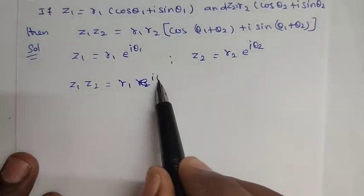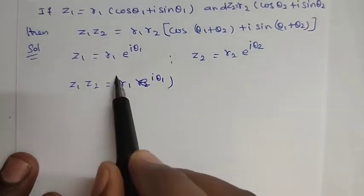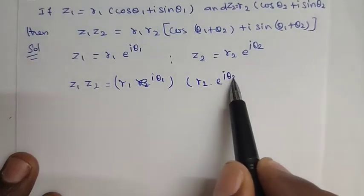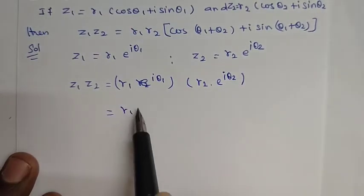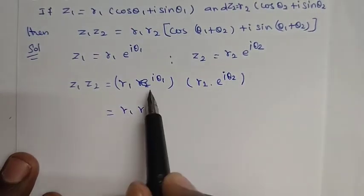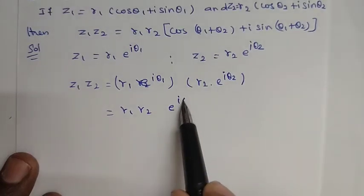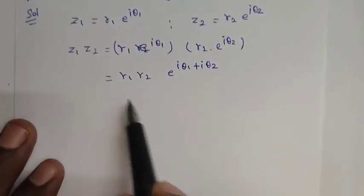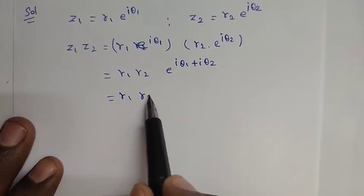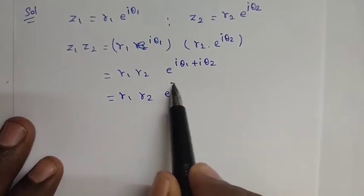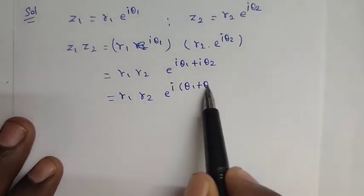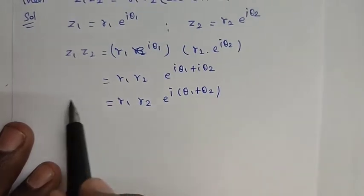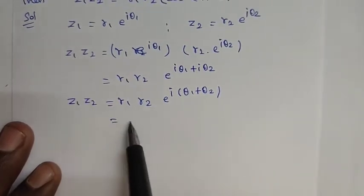So z1 into z2 equals r1 into e to the power of i θ1, multiplied by r2 into e to the power of i θ2. This gives us r1 r2 into e to the power of i θ1 plus i θ2, which equals r1 r2 into e to the power of i(θ1 plus θ2).